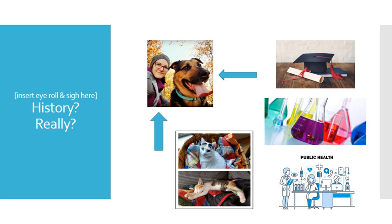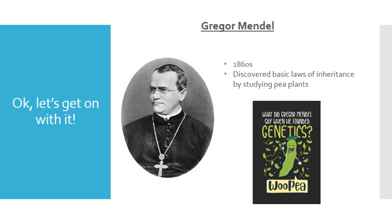First up we have Gregor Mendel. He was an Austrian monk who studied heredity in pea plants. He discovered the basic laws of inheritance and noted that inheritance of each trait was determined by what he called units or factors — now known as genes. He also determined that individuals inherit one such factor from each parent. Gregor Mendel is today considered the father of modern genetics.